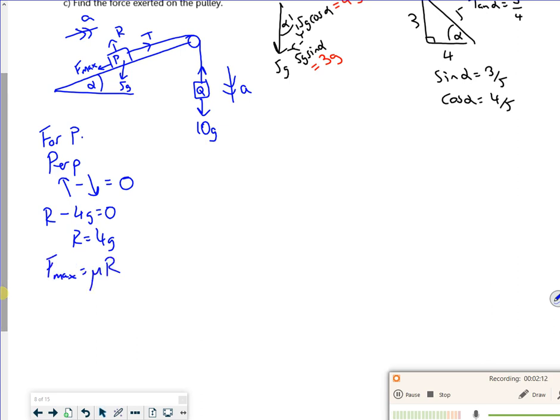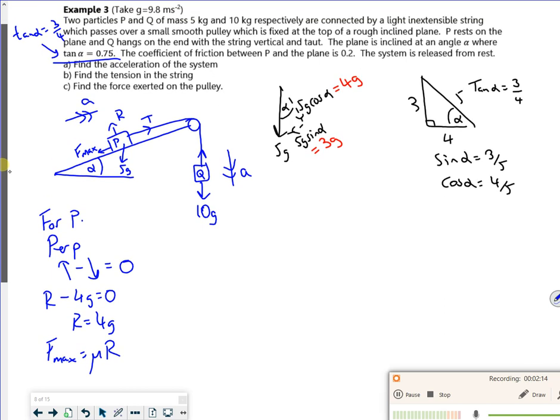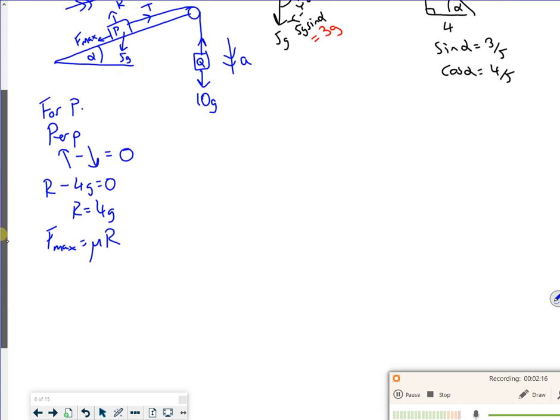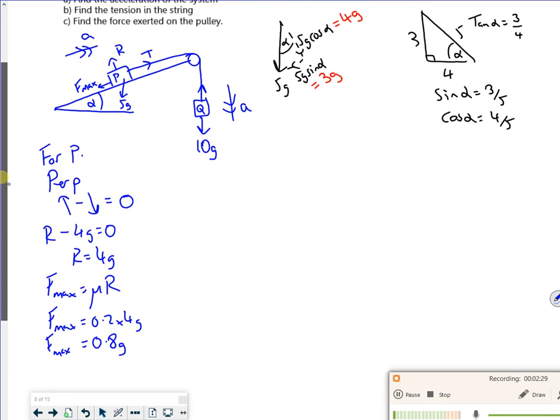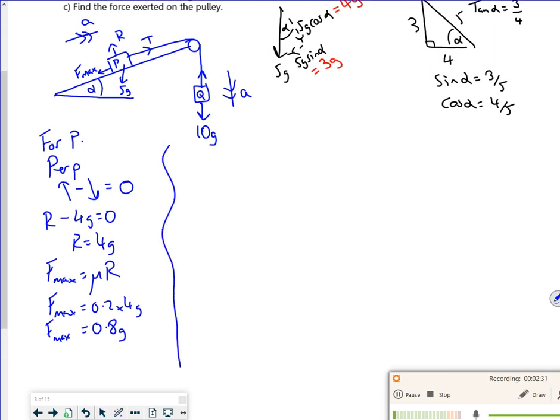If I do F_max, what's my μ? 0.2. So F_max is 0.2 times 4g, so it's 0.8g. I've got my F_max now.